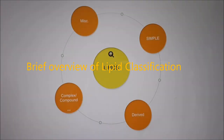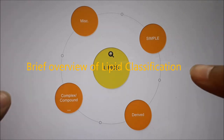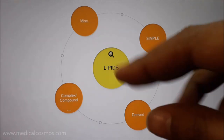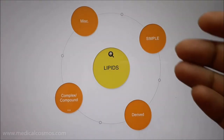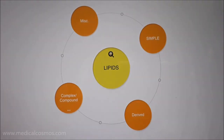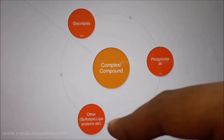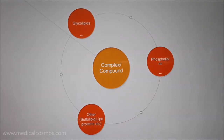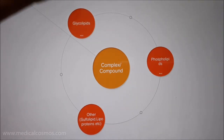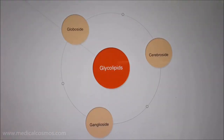In today's video we are going to discuss glycolipids. First, lipids are classified as simple, derived, complex, and miscellaneous. In our category we will see the complex lipids, in which glycolipids are included. In complex lipids you can see phospholipids and others such as sulfolipids, lipoprotein, and glycolipids. We have already discussed phospholipids; today we will discuss glycolipids.